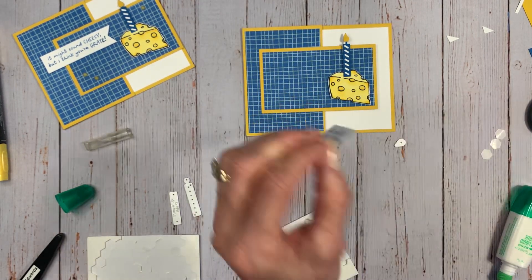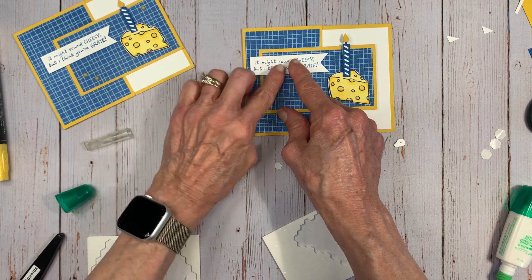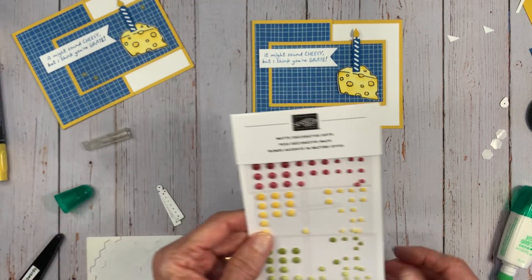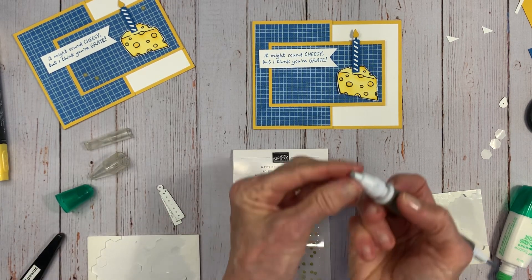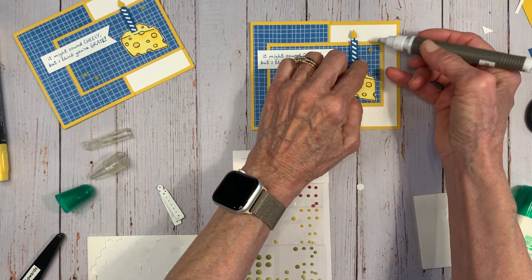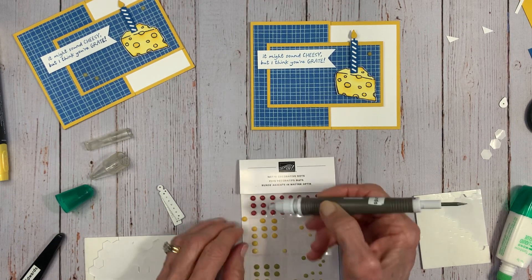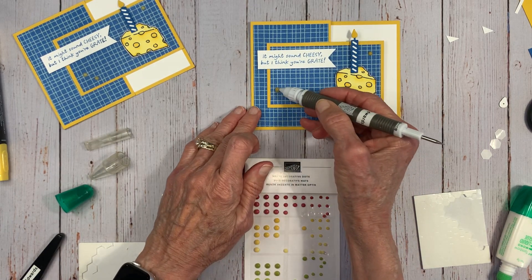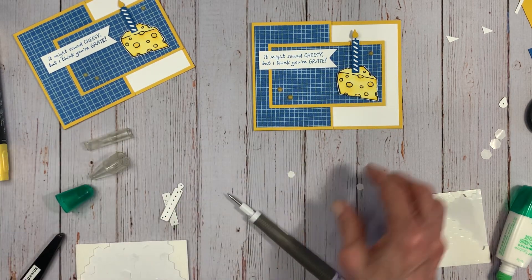Last thing I'm going to do is let's put some bling. And these are the matte decorative dots. These are really fun. Got some yellow dots. So I'm going to use my take your pick tool to add some additional interest. And that's our card.